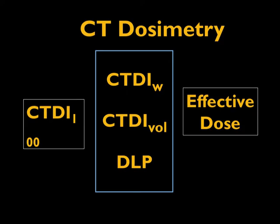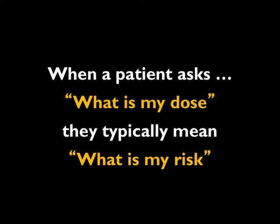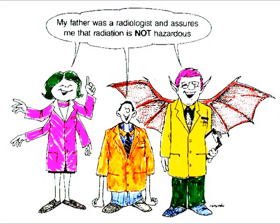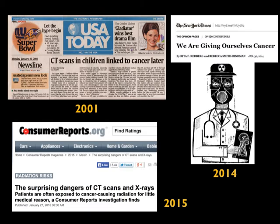These two dose descriptors — CTDIvol and DLP — are fixed with respect to the parameters selected, the type of scan, and the scan length. From here we jump to effective dose. This is important because when a patient asks 'what is my dose,' they typically mean 'what is my risk.' Patients are often worried and concerned about long-term radiation risk, and we are also seeing media articles in prominent journals and newspapers scaring patients about CT doses.